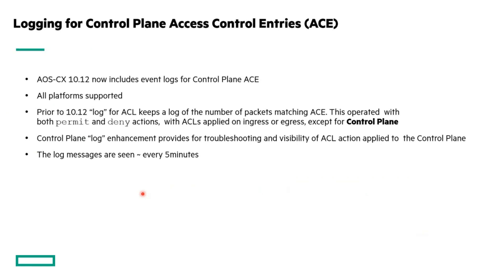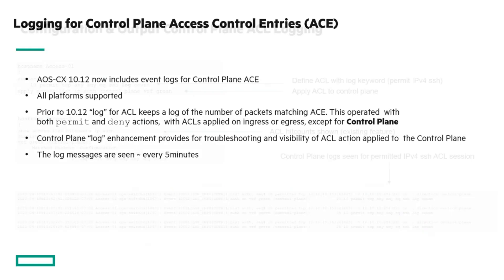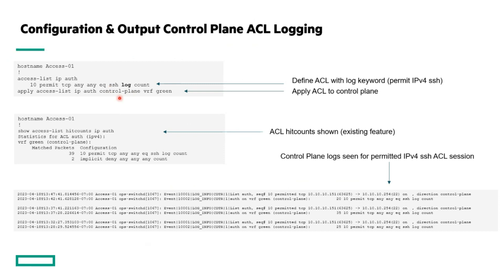An additional enhancement with 10.12 is that we now support event logs for control plane ACEs. Previously we didn't have ACL logging for the control plane, so we couldn't identify traffic from certain hosts trying to hit you with SSH requests on the control plane — we could only do that on the data plane. Now we've extended that to all platforms with 10.12. An example shows a control plane ACL set up to log against SSH traffic — hit counts are supported, and you can see control plane logs for permitted IPv4 SSH sessions, not just denies. These get logged on a five-minute period.